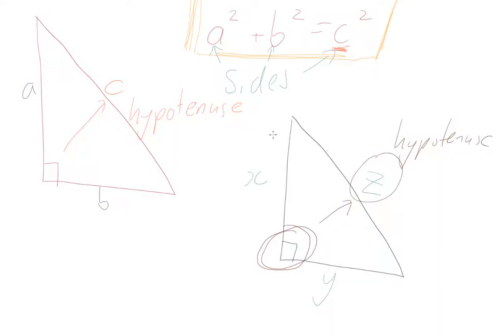In terms of using our theorem then, well, our theorem always says a squared plus b squared equals c squared, so if you want, you could relabel this as being c. From there, a and b don't matter.